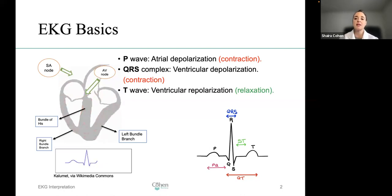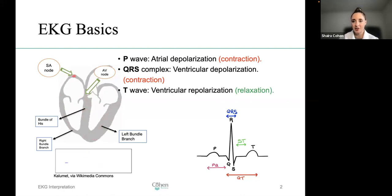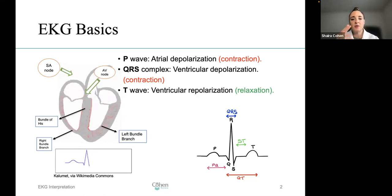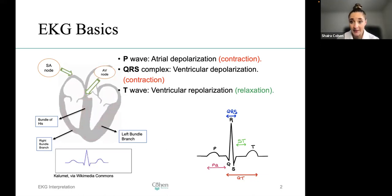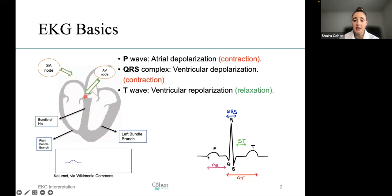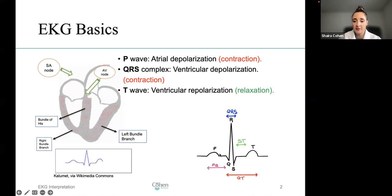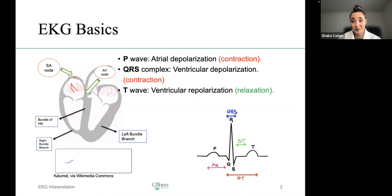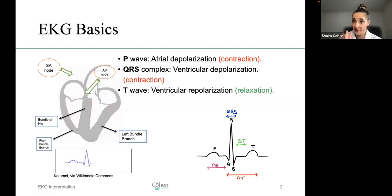The P wave and the QRS are the contractions. As soon as it activates, it contracts the atria via the SA node, and then the AV node contracts the ventricles — that's how we pump the heart. The T wave is the relaxation period. On a normal sinus rhythm, you should see a P wave, which is the contraction of the atria, followed by a QRS, which is the contraction of the ventricles, followed by the T wave — your relaxation.